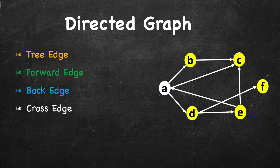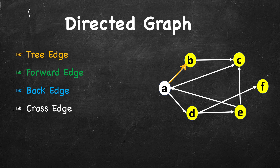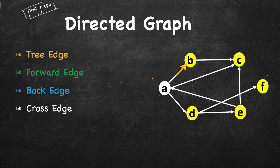When we do DFS we will annotate the edges in these colors. Whatever edges we take during the depth first search will become tree edges. Let's start DFS from node A. We will traverse this edge and come to B. We will also use our pre and post numbers that we had seen in earlier videos — if you haven't seen that, please watch that first, as it will be used for classifying these edges, especially in directed graphs.